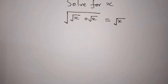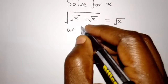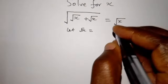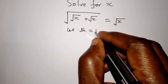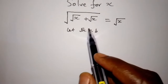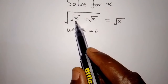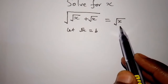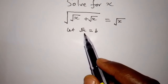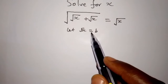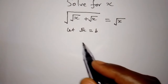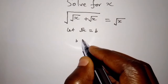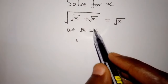We can say that let square root of x be b. You can see that square root of x is common here. So now we substitute b in place of square root of x.